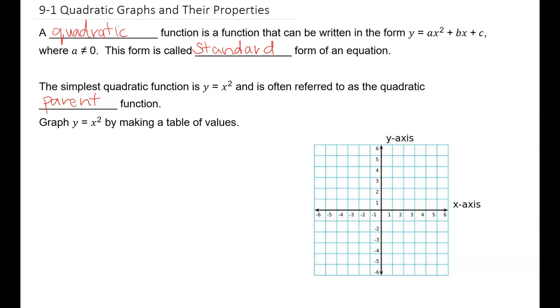We need to start off first identifying what a quadratic function is. That is a function that can be written in the form y equals ax squared plus bx plus c, where the value of a cannot be equal to 0. This form, y equals ax squared plus bx plus c, is called the standard form of an equation.